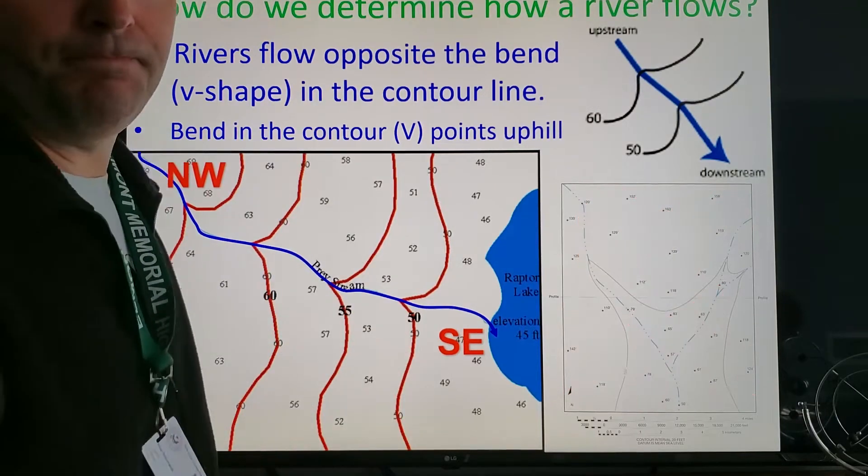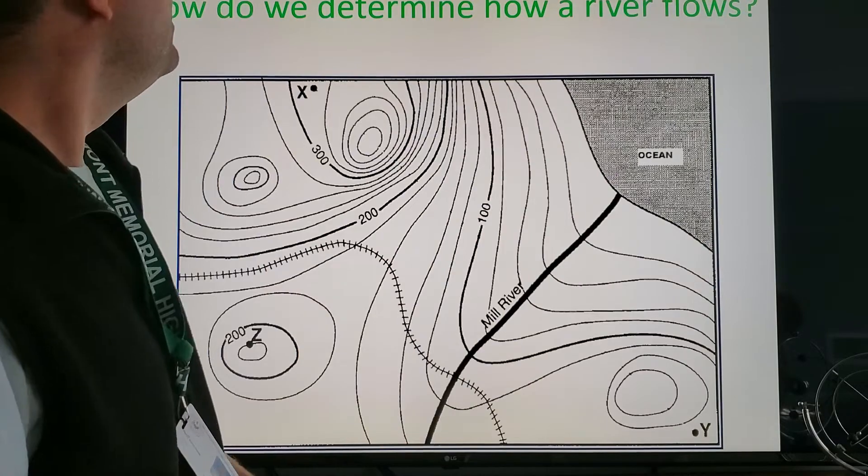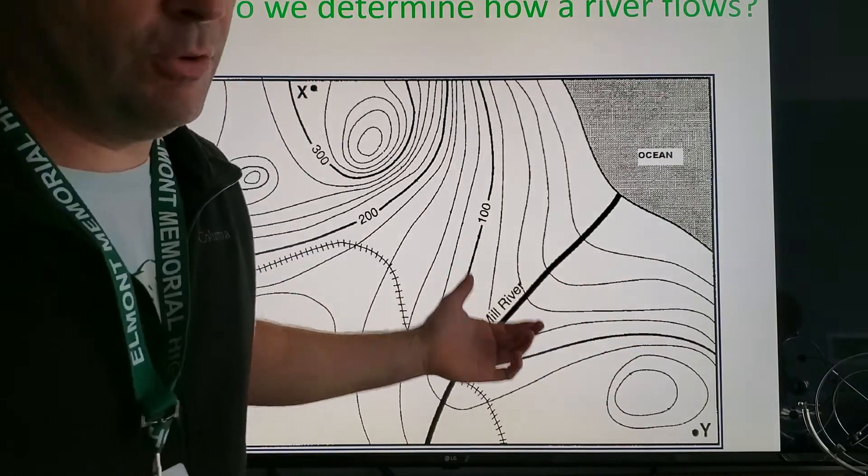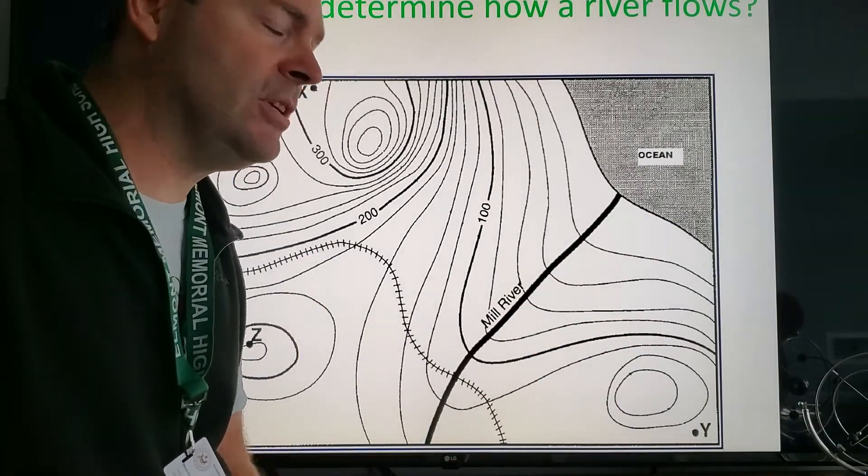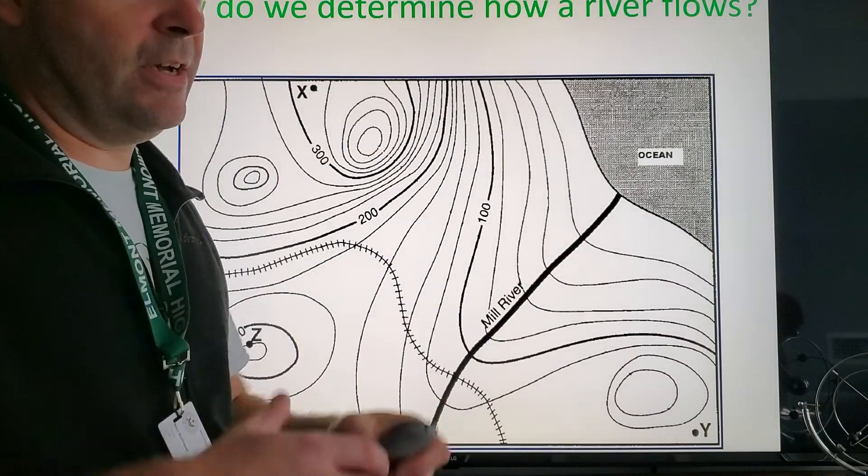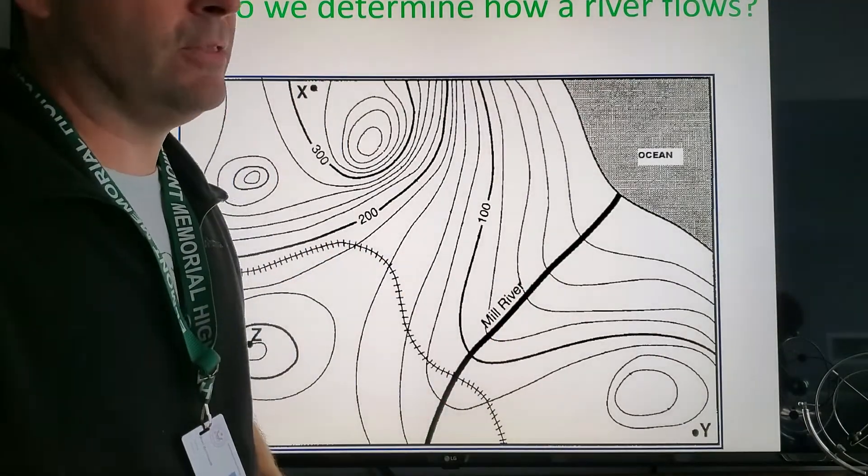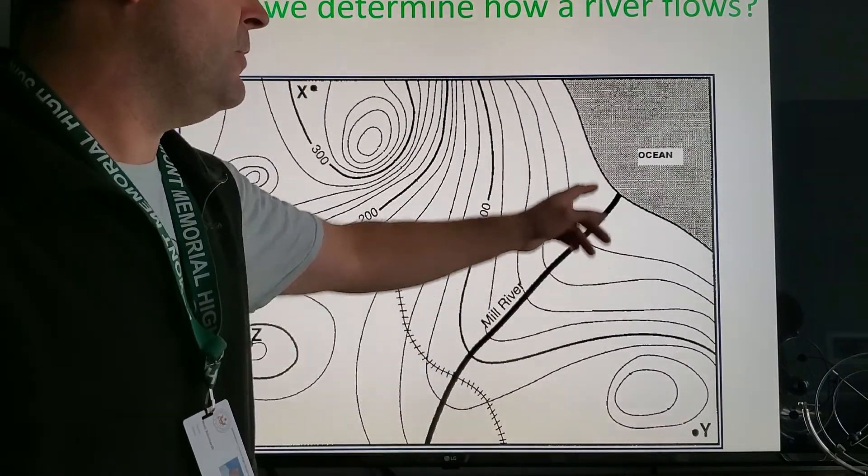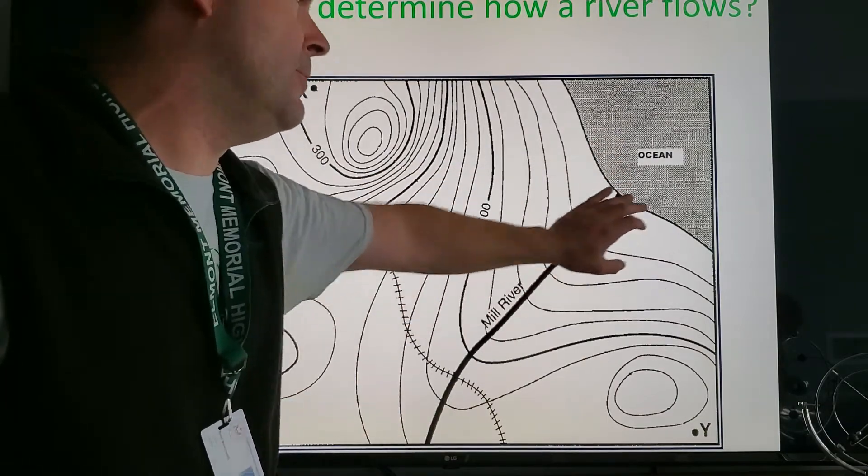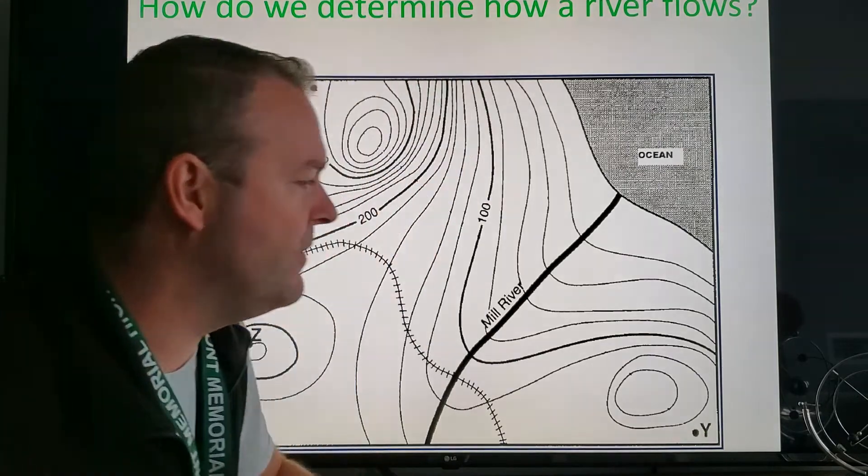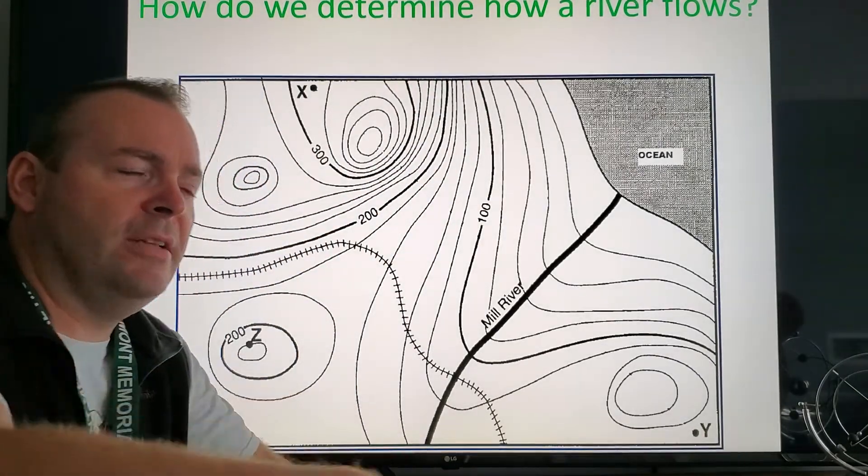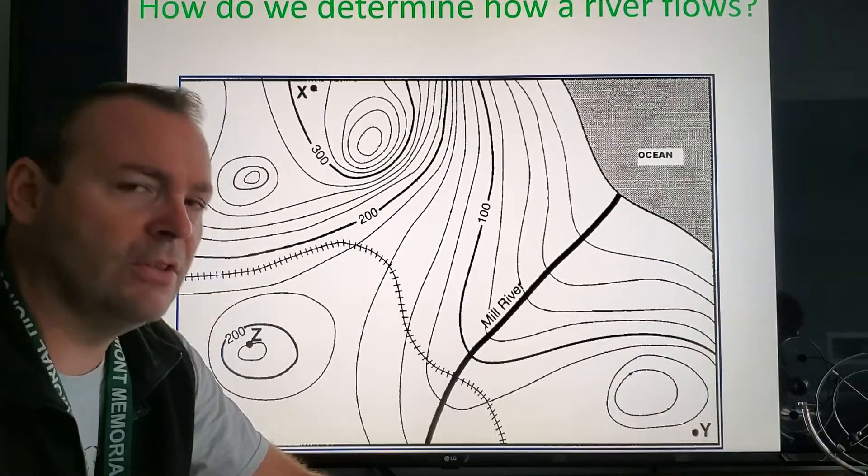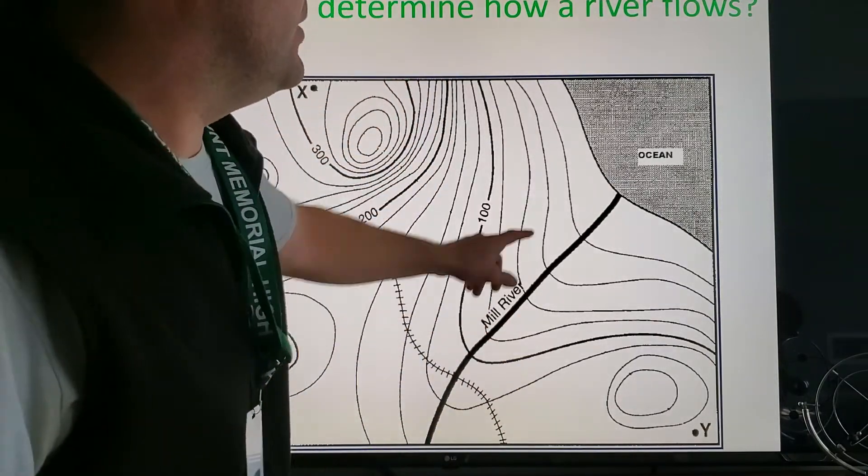Another determination of course has to do with the ocean. Now the ocean is generally the lowest point. There are some places below sea level on land but that's very much an exception to the rule and we'll talk about those like Death Valley for example is over 200 feet below sea level but there's no sea. But for the most part if you see an ocean everything's going down to the ocean.